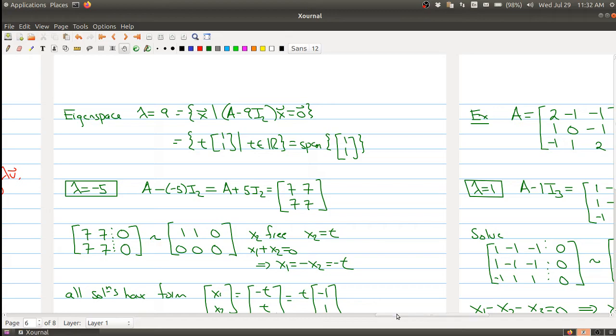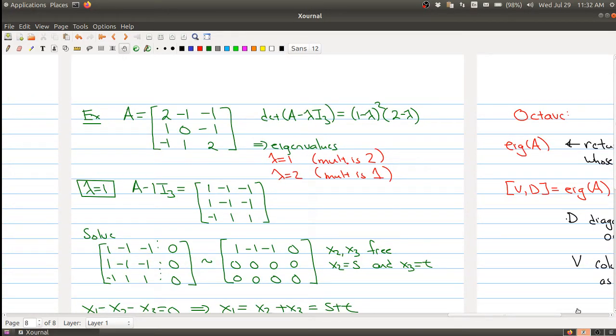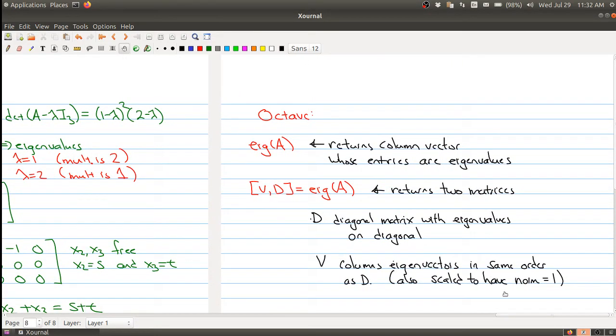I've summarized what I just said here in my notes. eig(A) will give you a column vector whose entries are the eigenvalues, and this is how to get the eigenvectors as well.